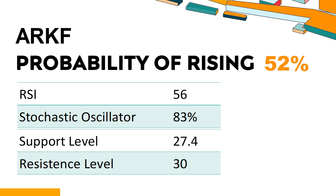Trend Outlook: The probability of ARKF share price rising is 52%. When the probability of rising is higher than 50%, it means that the stock has a higher chance of rising. If the probability of rising is lower than 50%, it means that the probability of falling is high. Combining multiple technical analysis indicators, ARKF has four bullish signals and two bearish signals.